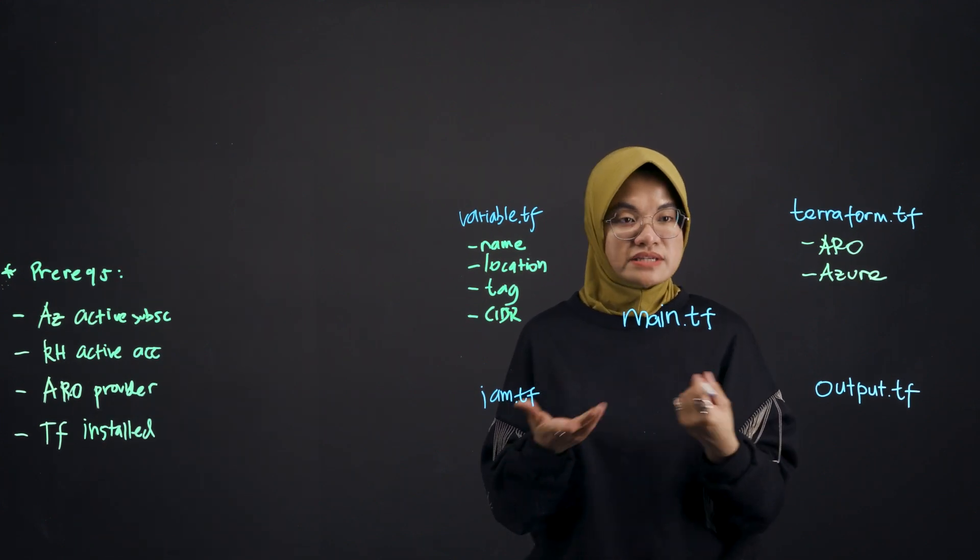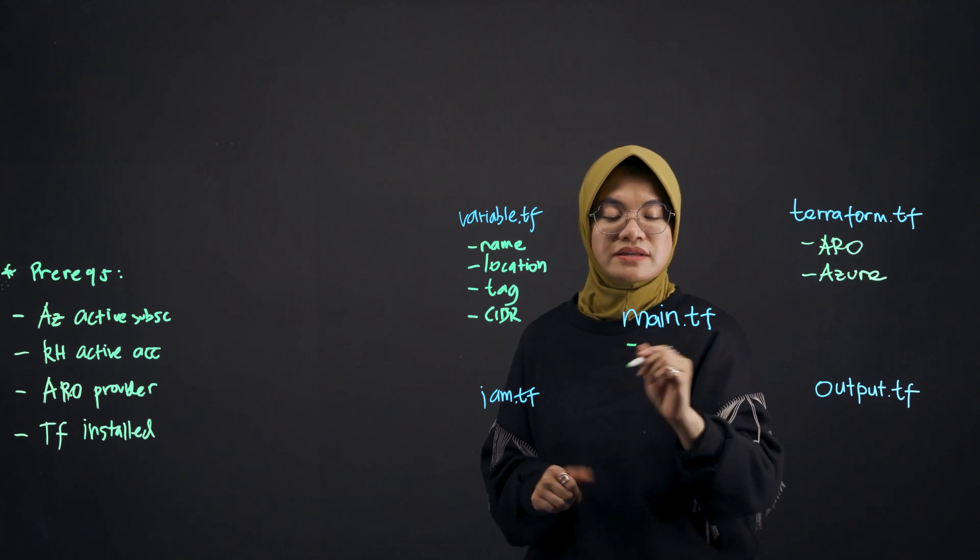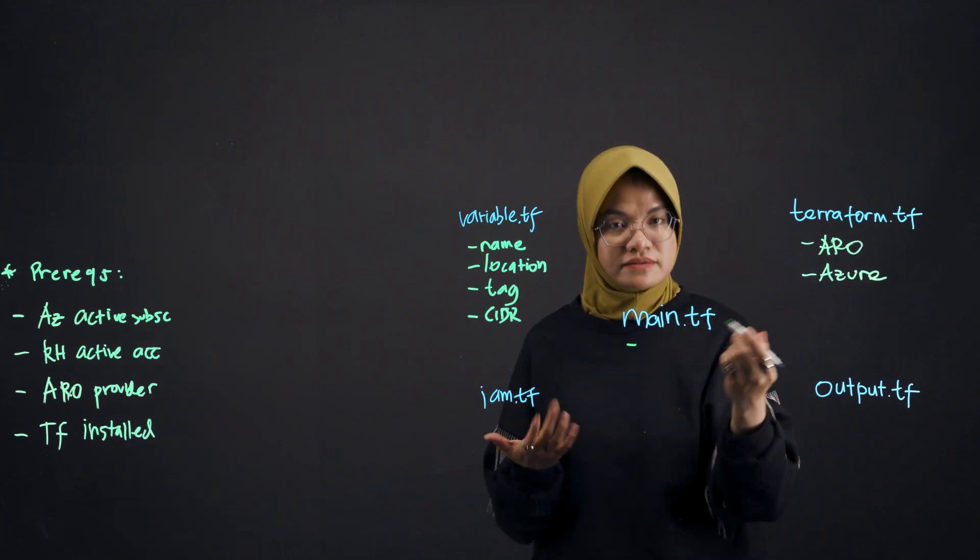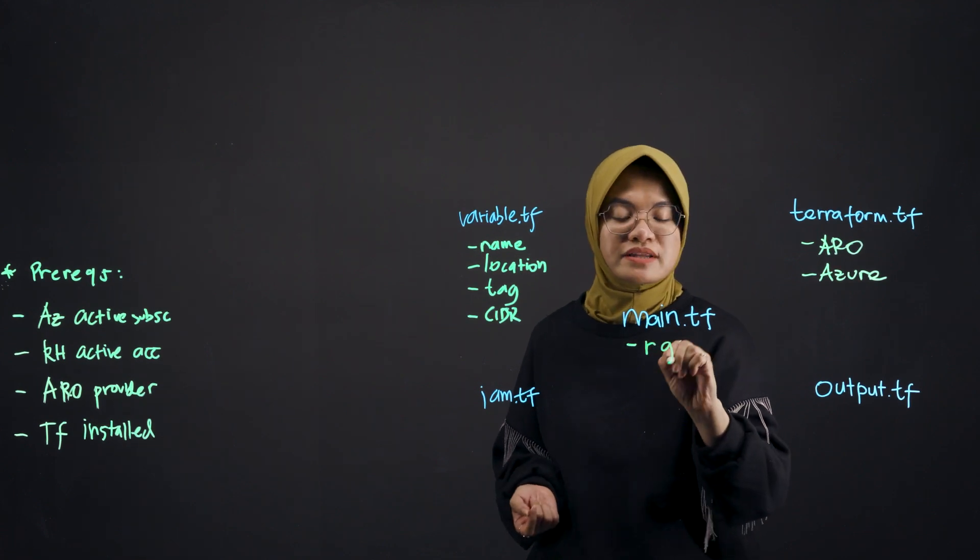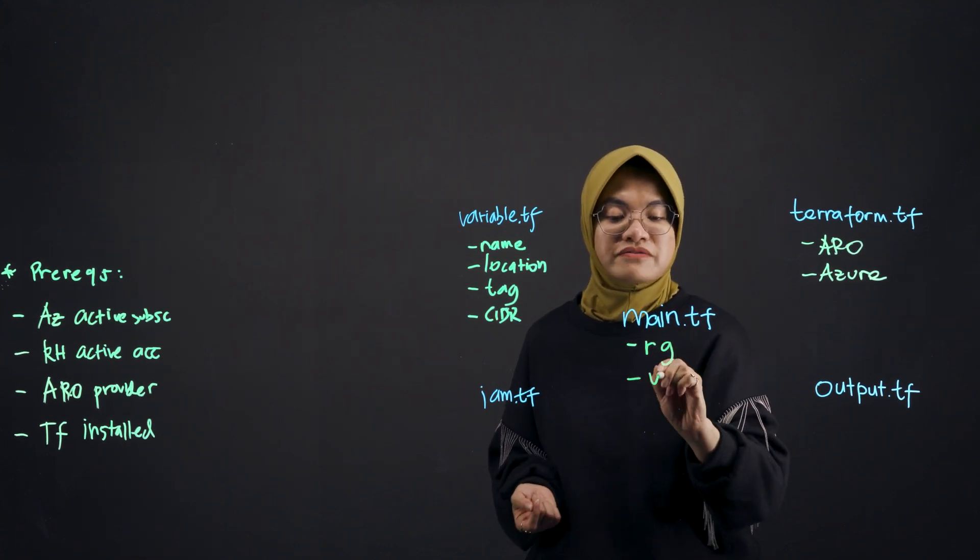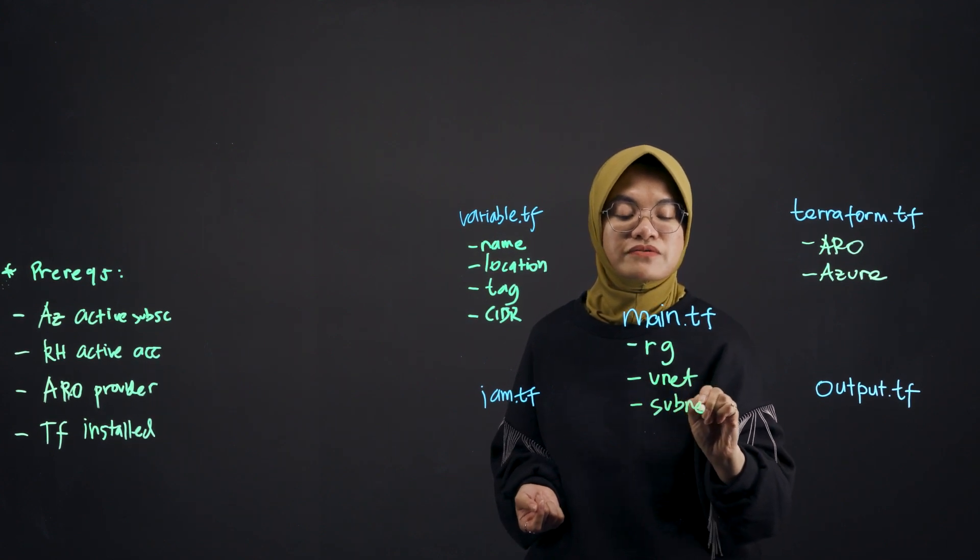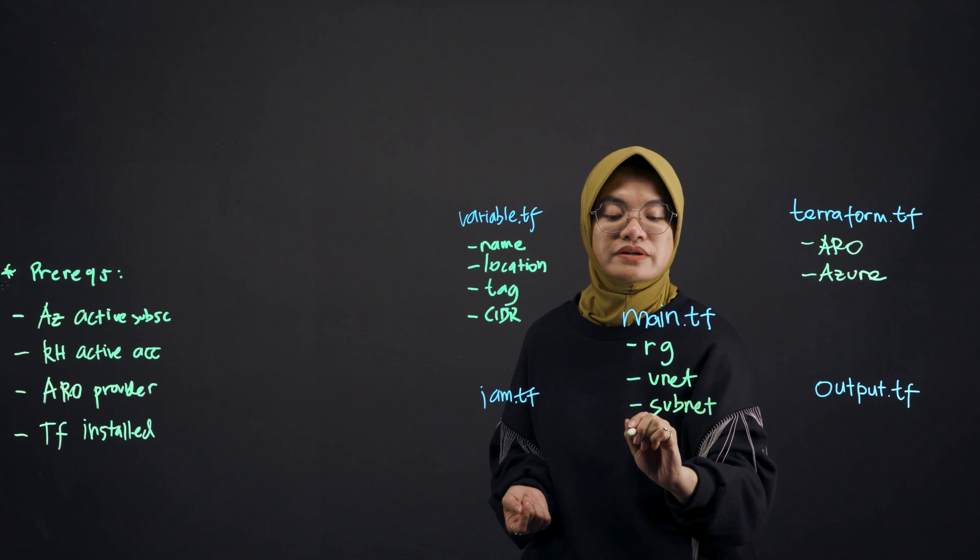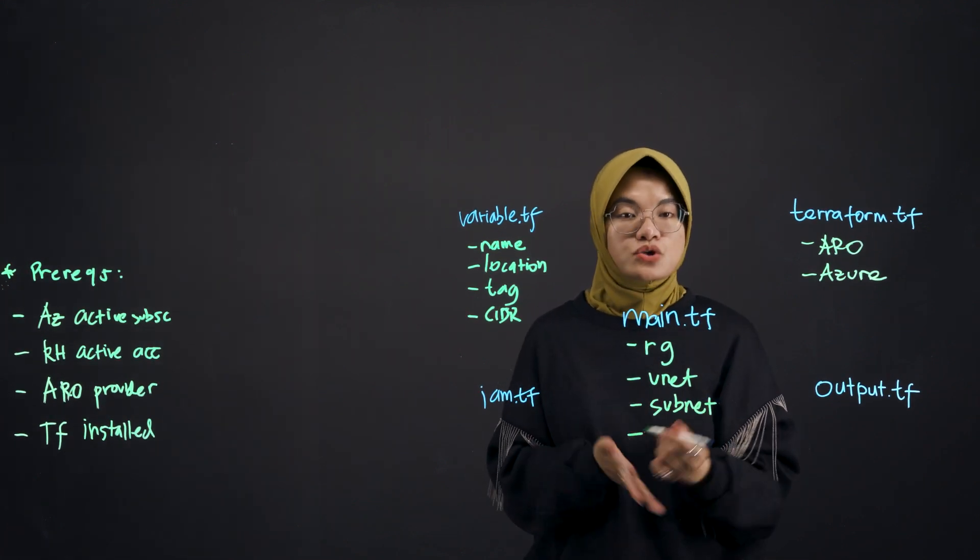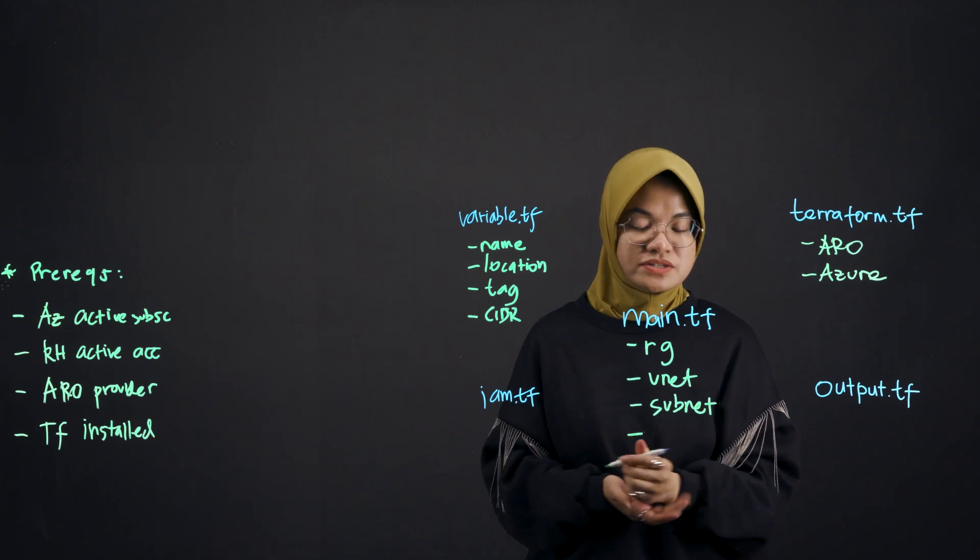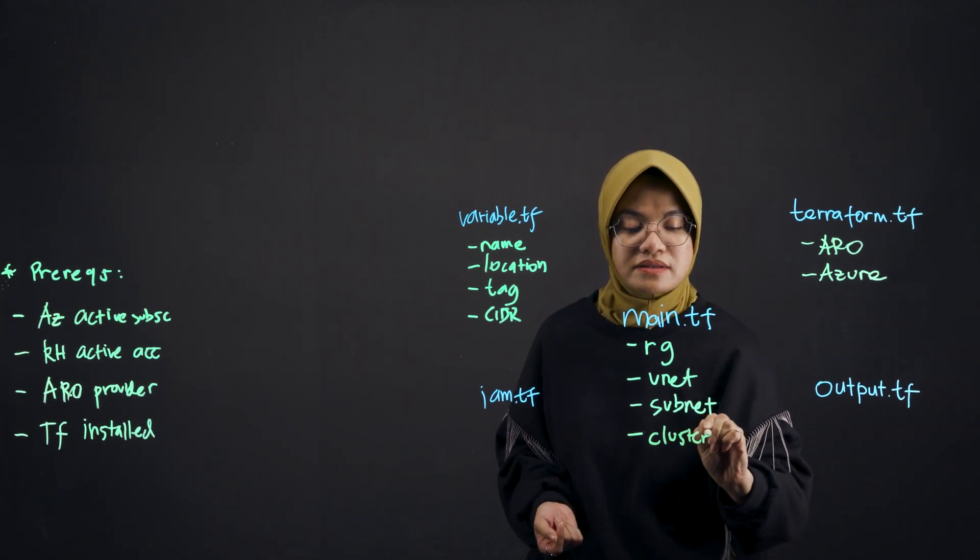And so here in main.tf, you would call the dependencies that you've already specified. And then here you will define your resource group, abbreviated as RG. Also here define your VNet or virtual network. You also define your subnet. There will be two of them, one for control node and the other one for the worker node. And then you will also define your OpenShift cluster specs.